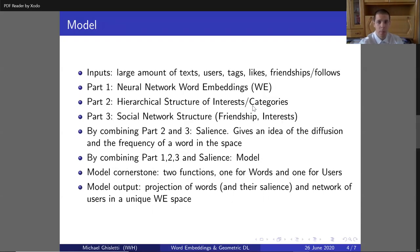So let's give you an overview of the model. The model has inputs: large amounts of text, users, tags, likes, and friendships or follows, depending on the social network. From the inputs, three parts are developed. First, neural network word embeddings, which is something not new. Then a hierarchical structure of interests and categories, hierarchical in the sense that there is a sort of hierarchy on the words.